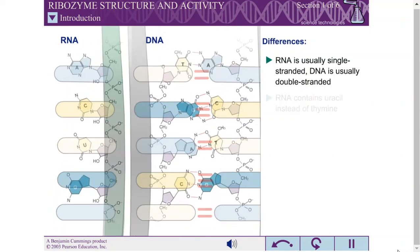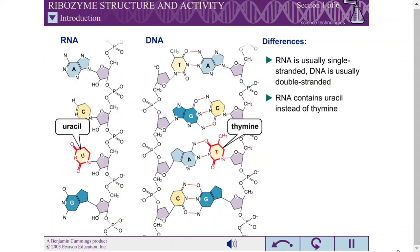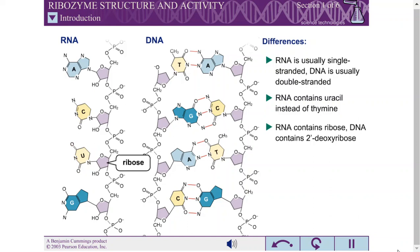Second, RNA contains uracil in place of thymine. Uracil is identical to thymine, except that it lacks the 5' methyl group. Third, the backbone of RNA contains ribose rather than 2' deoxyribose. The substitution of a hydroxyl group for a hydrogen atom is important for the catalytic activity of many ribozymes.